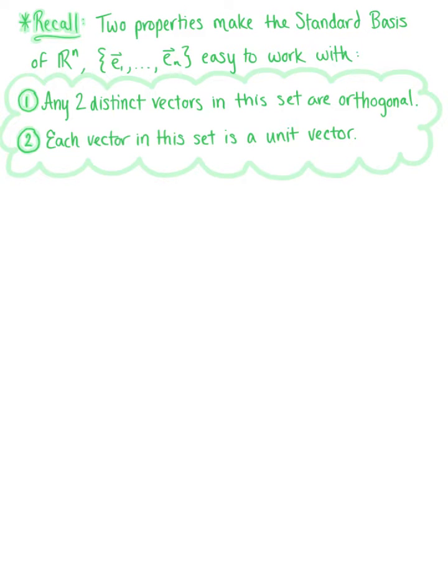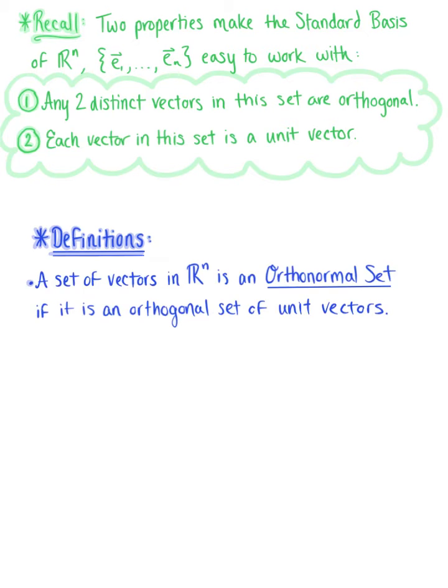to establish the following definitions. So we say that a set of vectors in R^n is an orthonormal set if it is an orthogonal set of unit vectors.